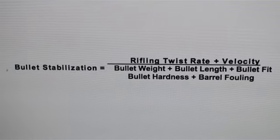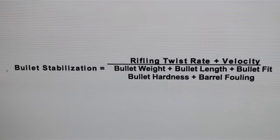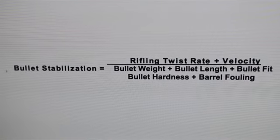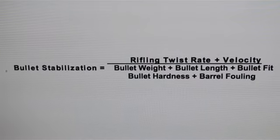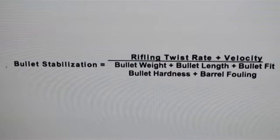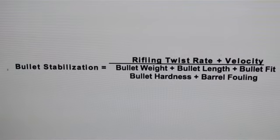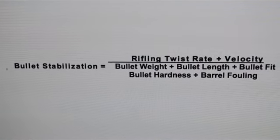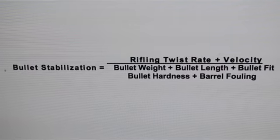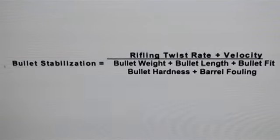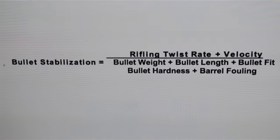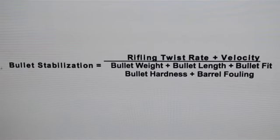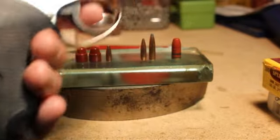This is not a formula, but rather a rule of thumb showing the relationship of all these factors. Rifling twist rate and velocity increase bullet stabilization. All the other factors — as they get worse — cause less bullet stabilization, requiring more rifling twist rate and more velocity to compensate. If the barrel fouling is bad enough, it throws everything out the window. These are all factors in bullet stabilization.